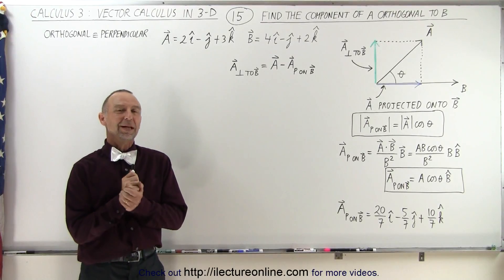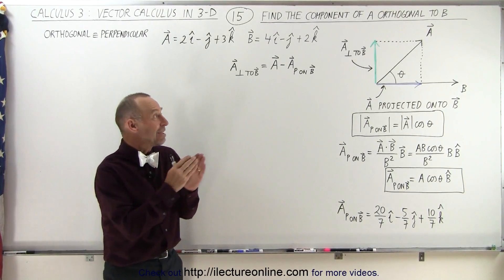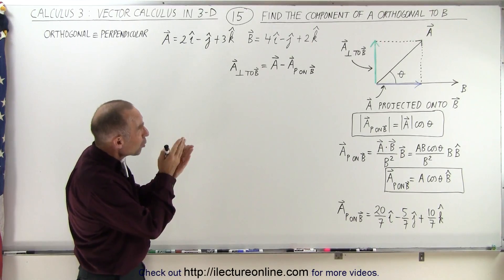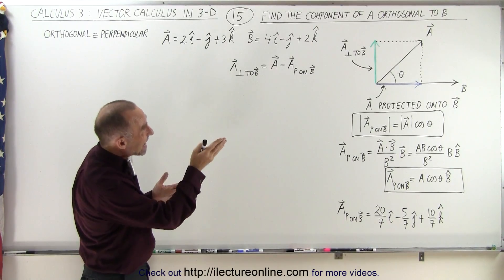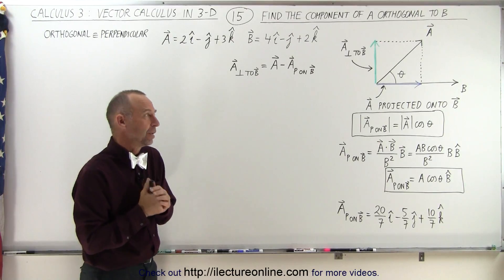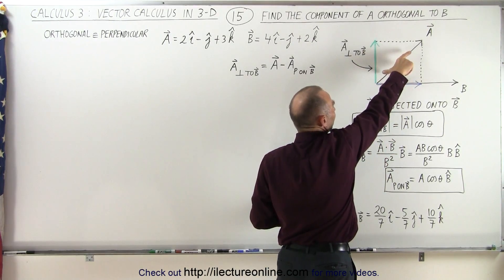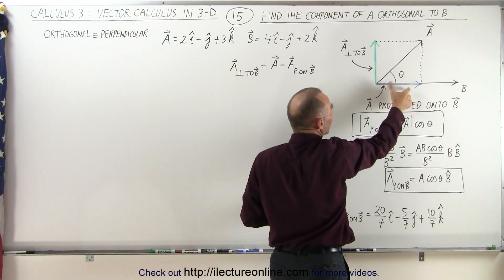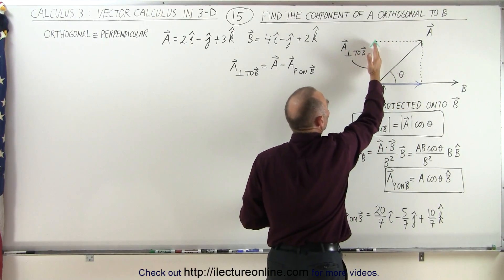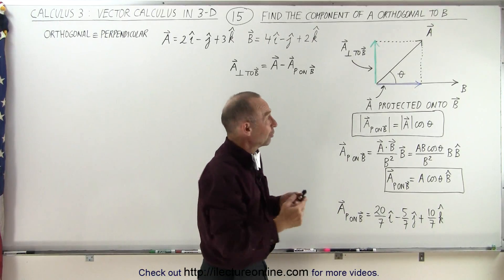Welcome to our lecture online. In this video we're going to find what we call the component of A orthogonal to the vector B. In the video before we found the projection of A onto B, but now we want to find the component of A which is orthogonal, which means perpendicular to the vector B.